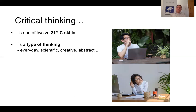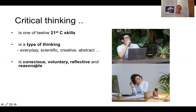It's a type of thinking along with everyday thinking, scientific thinking, creative thinking, and so on. Everyday thinking is the common type we engage in every day when random thoughts drift into our heads unexpectedly. Critical thinking is not like that — it's not random at all. It's very conscious thinking. It's also voluntary, and it's reflective, meaning that it involves deep thinking over a period of time. And it's also reasonable — based on reason. We use reason to decide what to do or what to believe.